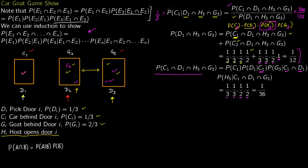So if you stick with your door, you win with probability one third. If you switch, you win with probability two thirds, since two thirds plus one third equals one. This intuitively makes sense: if you pick the wrong door, you give the host no choice — he is forced to open the only remaining goat door. That happens in two out of three cases, so switching helps in those two cases.